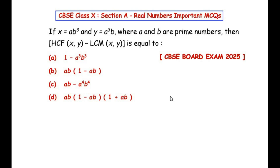Hello and welcome to my channel. In this video we are going to solve a multiple choice question from the real numbers chapter. The question is: if x equals a times b to the power of 3, and y equals a to the power of 3 times b, where a and b are prime numbers, then HCF(x, y) minus LCM(x, y) is equal to?